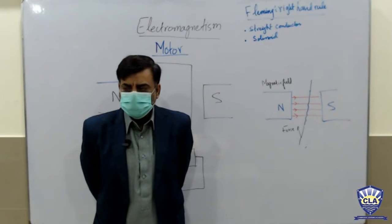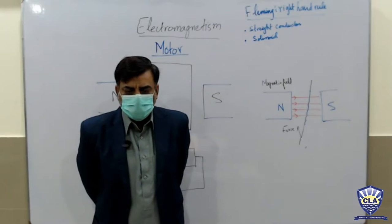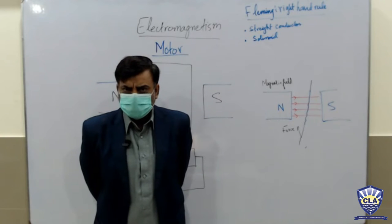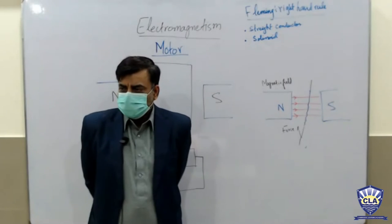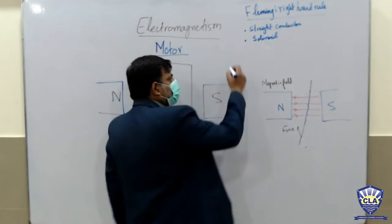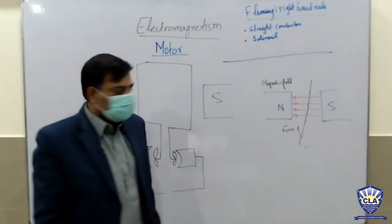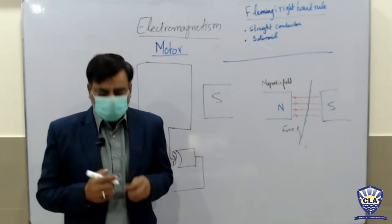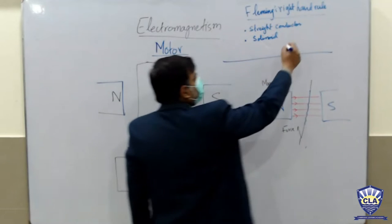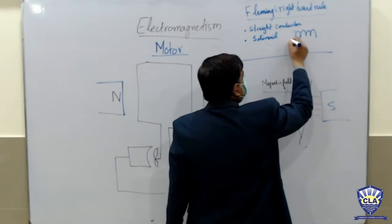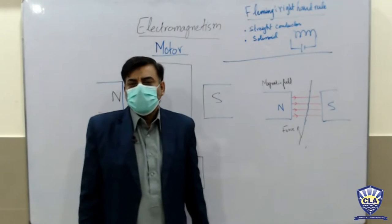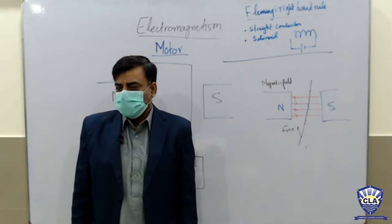Fleming's right hand rule — the curling of the fingers shows the direction of the magnetic field, and the thumb shows the direction of the current. But wait — is that for a straight conductor or a solenoid? For a solenoid, the thumb shows the polarity of the magnetic field — which pole? The north pole. Good.